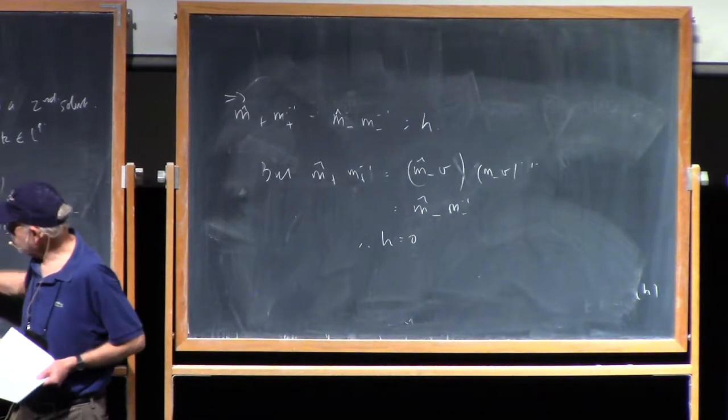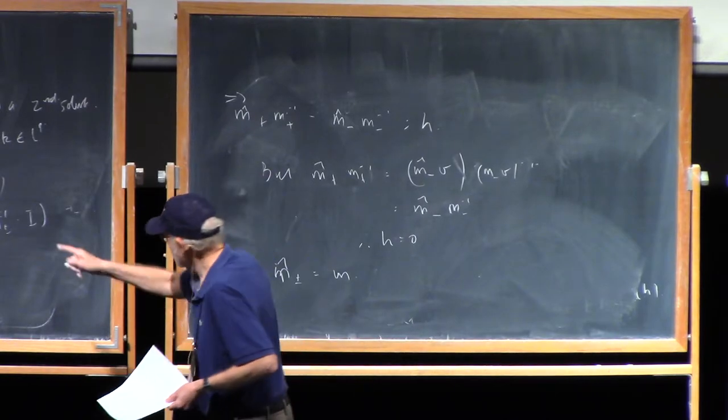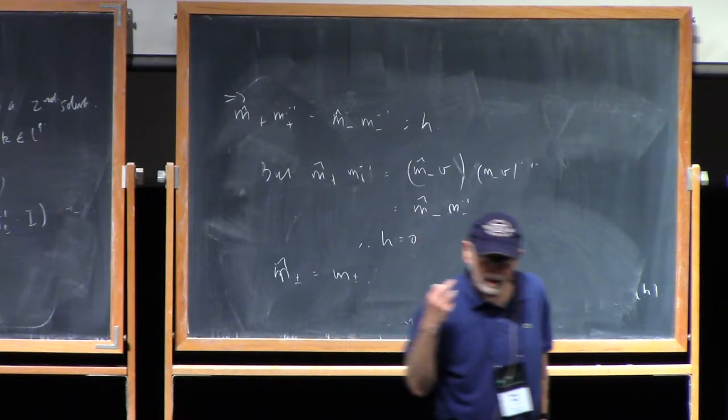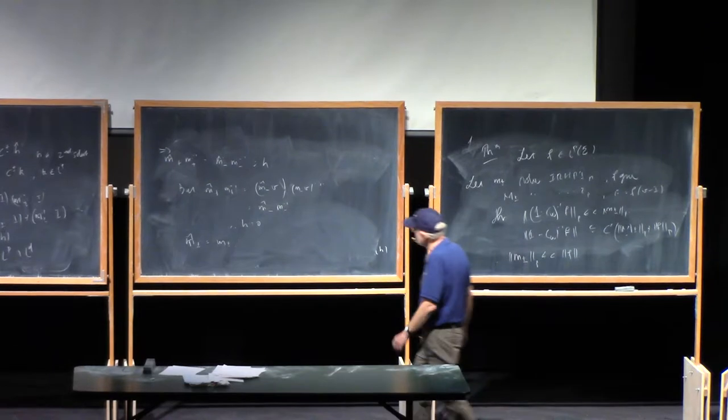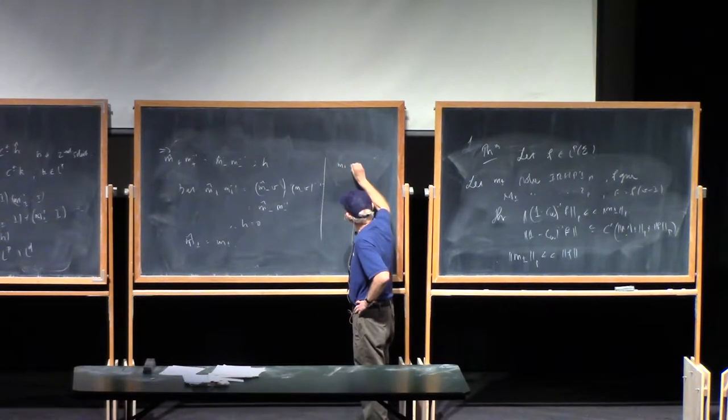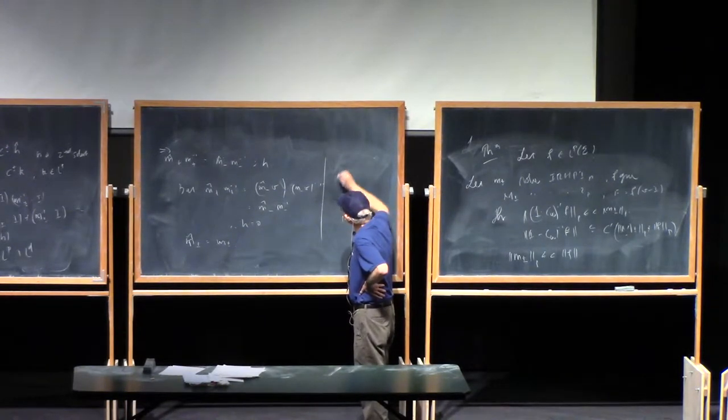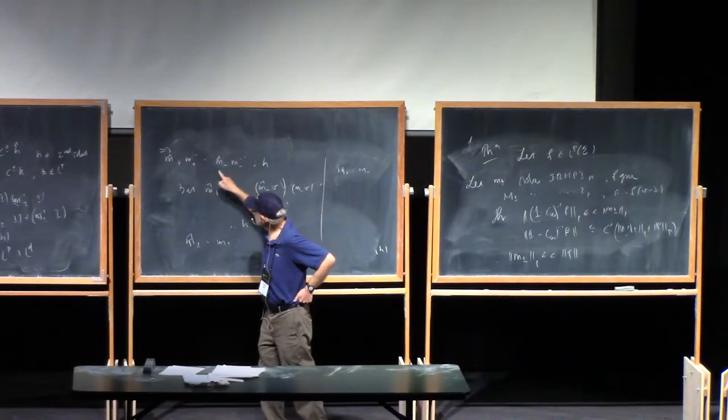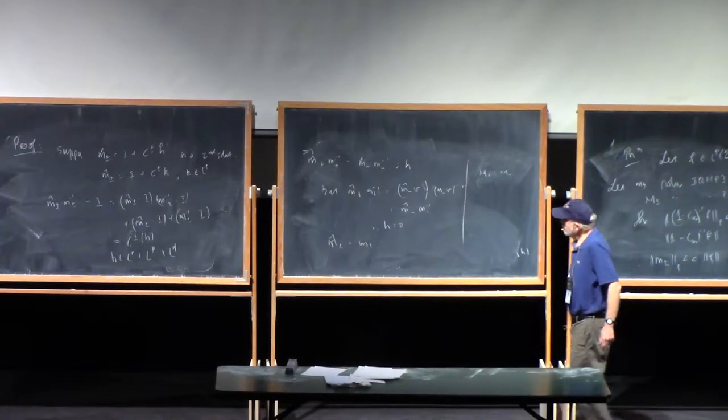Which means that this thing is 0, which means that m hat plus minus is equal to m plus minus. So now what is really the issue here analytically? The issue is really this. Suppose that I have the real analytical issue that I have. Suppose I've got a Riemann-Hilbert problem for m plus and I find that some, let's call it, m plus equals m minus v. So I've got something like this is equal to something like that.